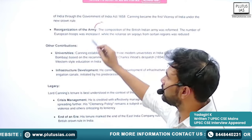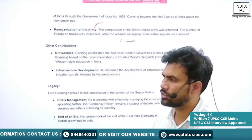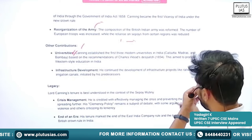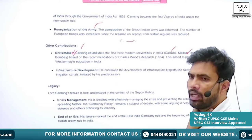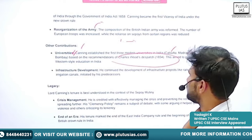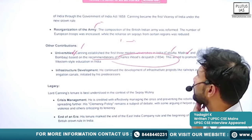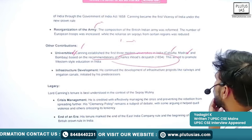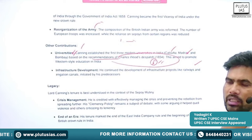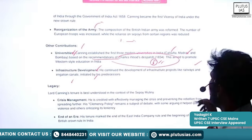After 1857, the reorganization of the army also took place — the percentage of British soldiers in the Indian army was greatly increased. Lord Canning also contributed to establishing universities at Calcutta, Madras, and Bombay — the three major centres of British presence. The Woods Dispatch — considered the Magna Carta of education in India — was issued based on his recommendations, aimed at promoting Western-style education. He also contributed to infrastructure development like irrigation canals and railway networks.